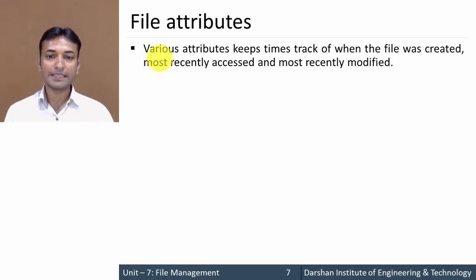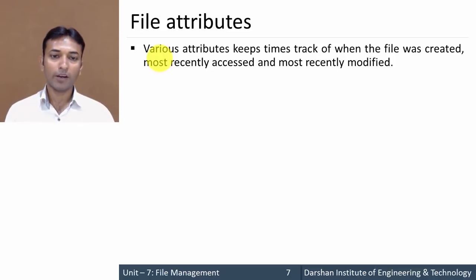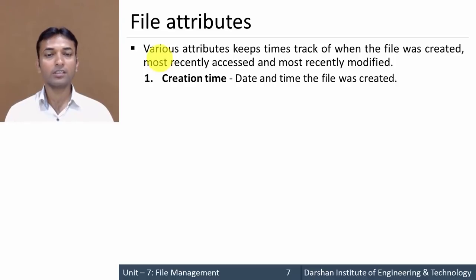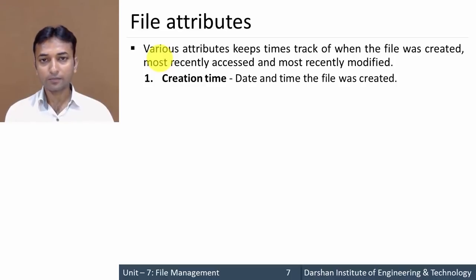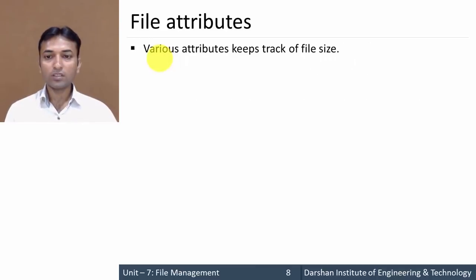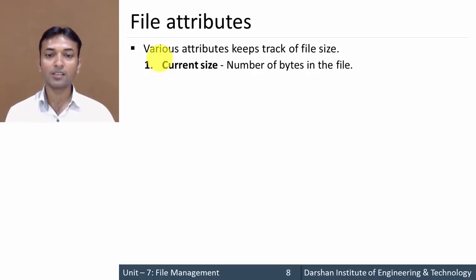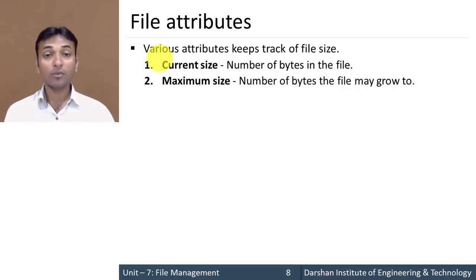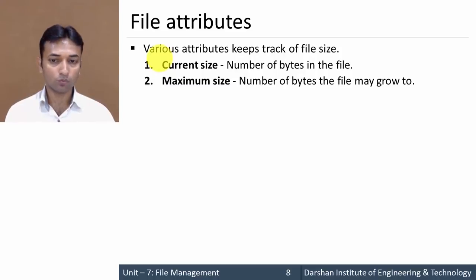The fourth category of attributes keeps time track of when the file was created, most recently accessed, and most recently modified. The creation time attribute contains the date and time when the file was created, and time of last access contains the date and time the file was last accessed. The fifth category keeps track of file size: current size contains the number of bytes in the file, and maximum size keeps the number of bytes the file may grow up to.